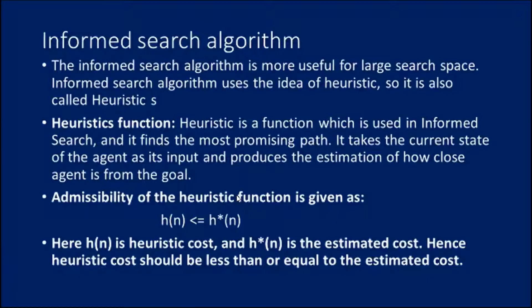If there is information about the particular problem, we know how to solve it and what way the goal is going to be, so it is easier for us to find the solution. When there is no information, as in uninformed search, it is difficult to find the solution. Such algorithms are used for very smaller search spaces where no information is available — that is also not a problem. We can use uninformed search for smaller search spaces.